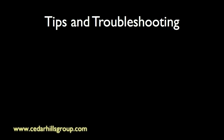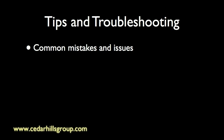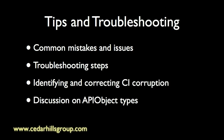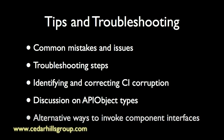The fifth and final section of the video will provide the viewer with tips and troubleshooting techniques. We cover common issues and mistakes to watch out for that can cause difficulties for the developer, as well as common steps needed to troubleshoot and resolve issues with CI. We cover component interface corruption and how to identify and resolve it. We further explain the API object type used extensively in component interface PeopleCode. Finally, the video introduces two alternative ways to invoke a component interface, including an introduction to Excel to CI and a brief overview of invoking CI within an integration broker.